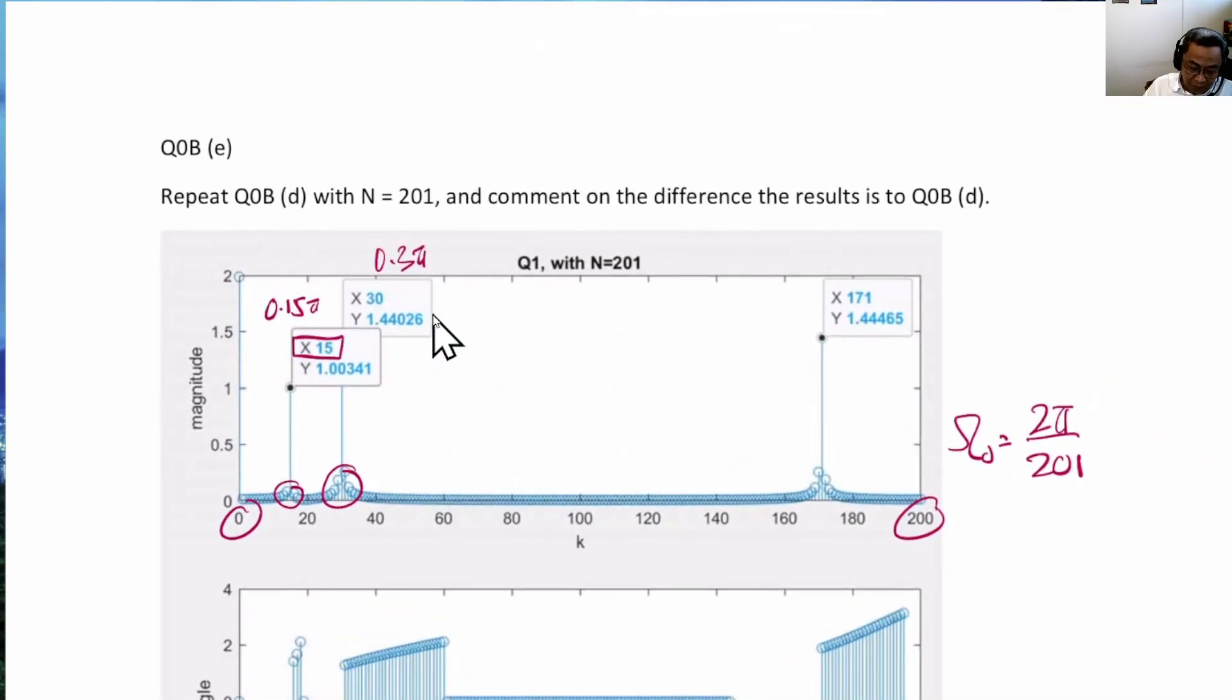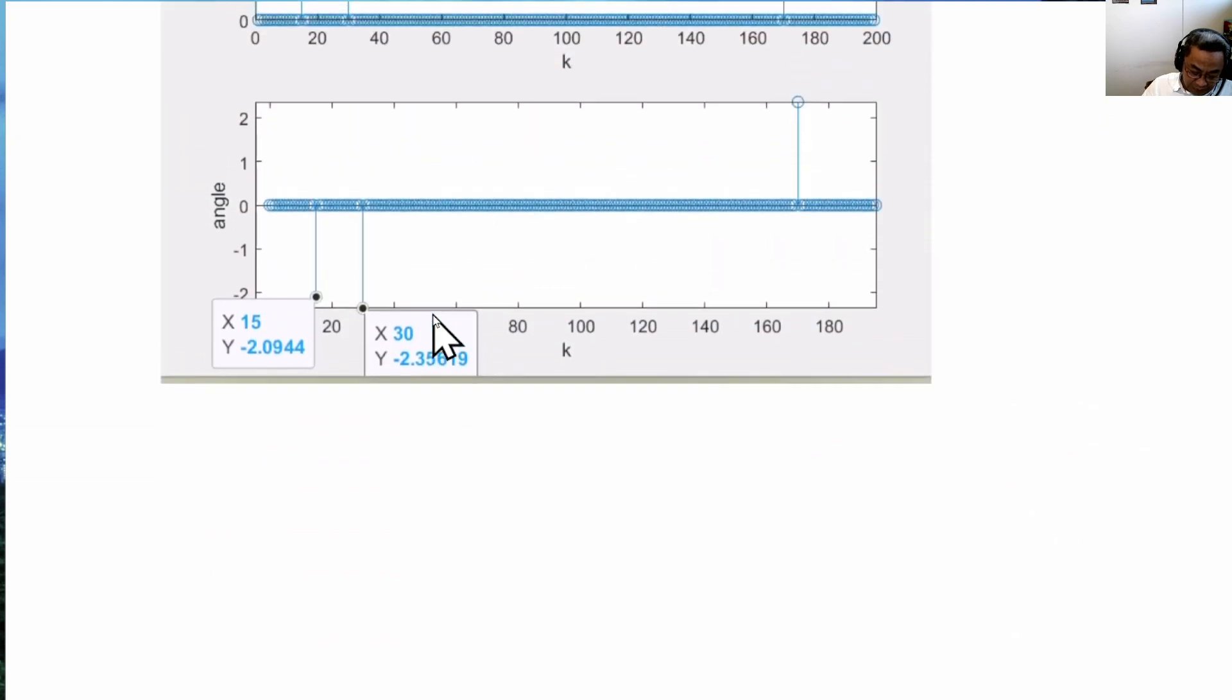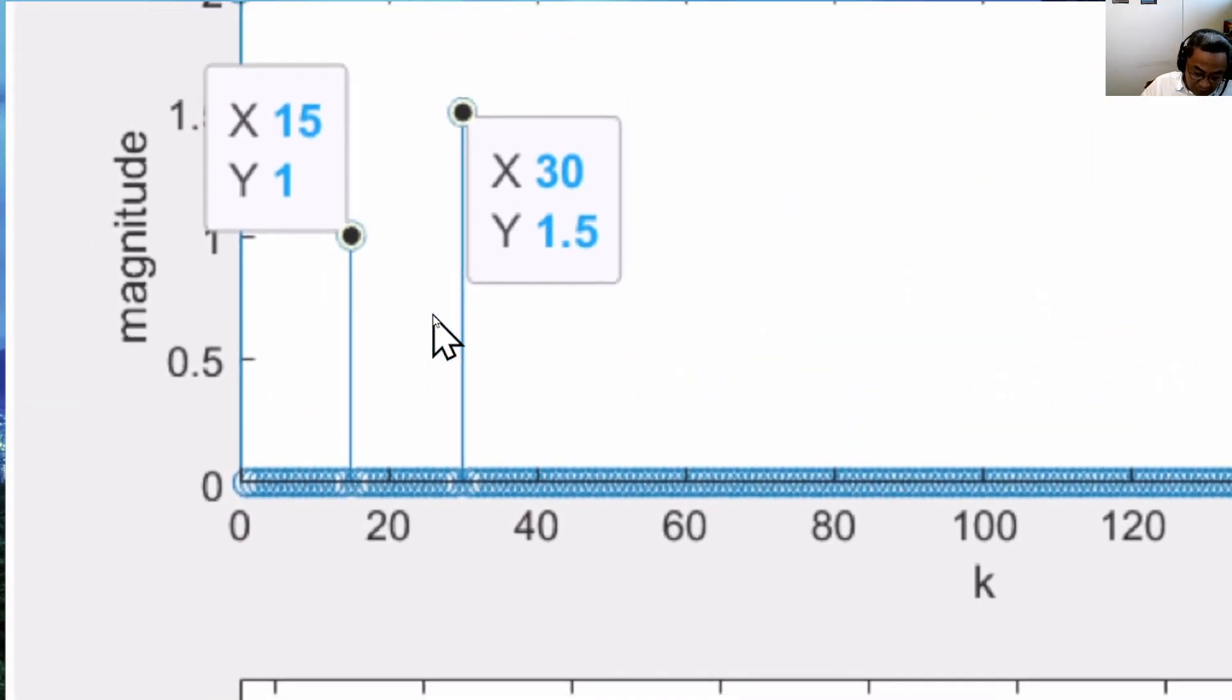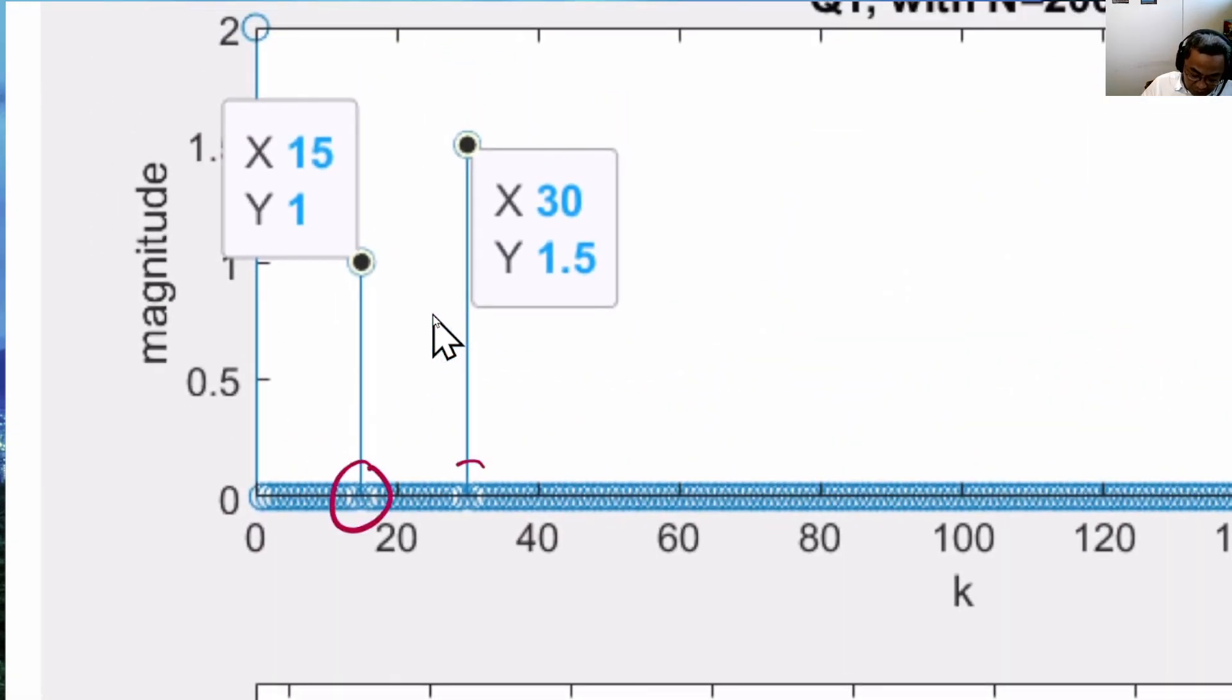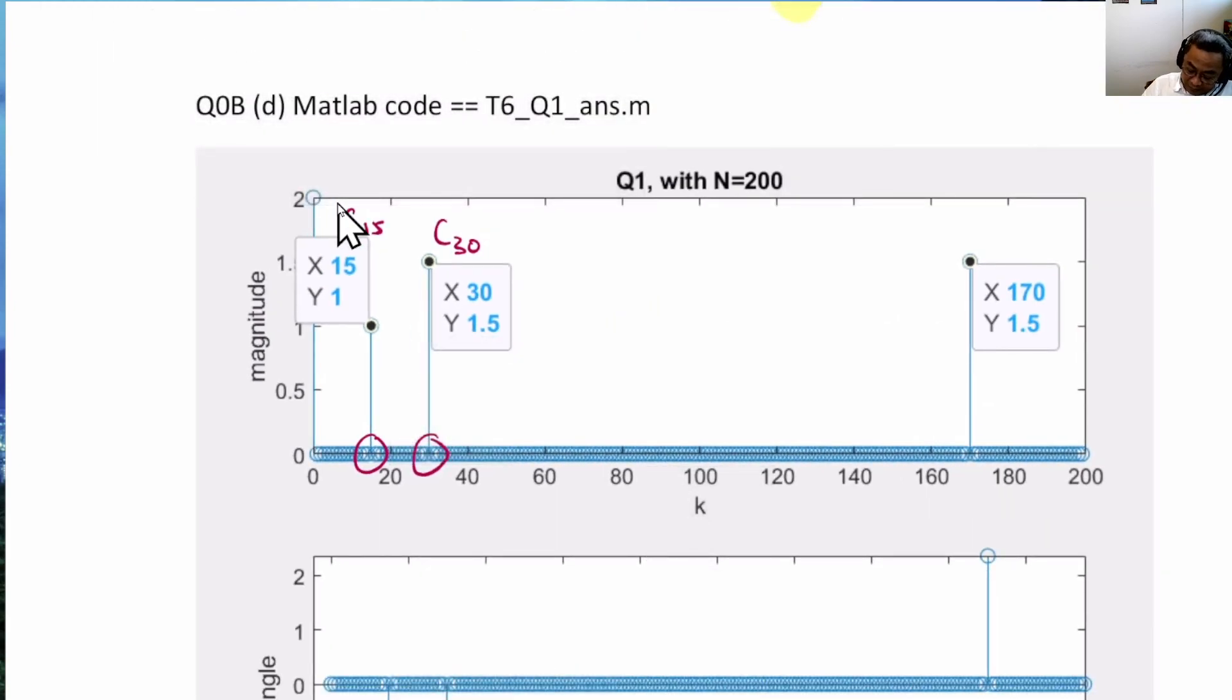And let us compare with the previous answer, where in the previous answer, all the energy lands at c15 as well as c30 and c minus 30, which is c170.